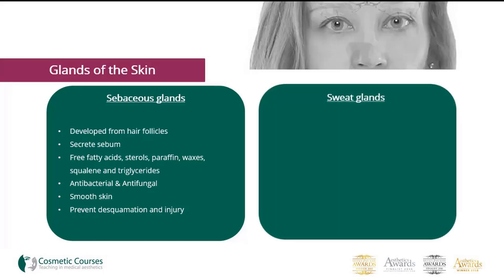There are two types of sweat glands within the skin. The eccrine glands are sweat glands found throughout the body. They release a watery clear fluid and are involved in temperature regulation of the body.